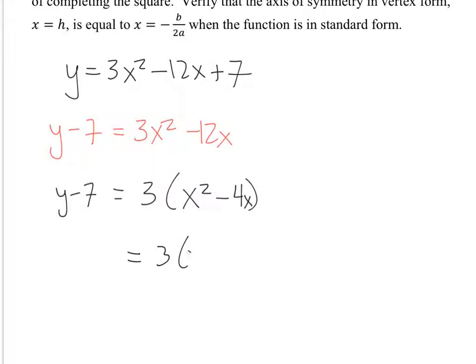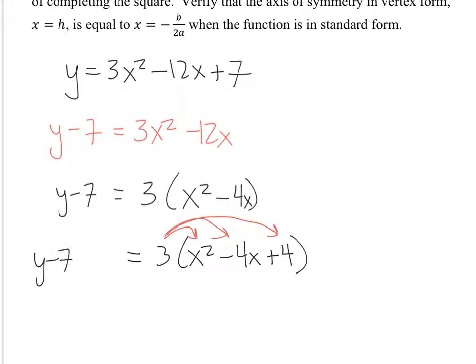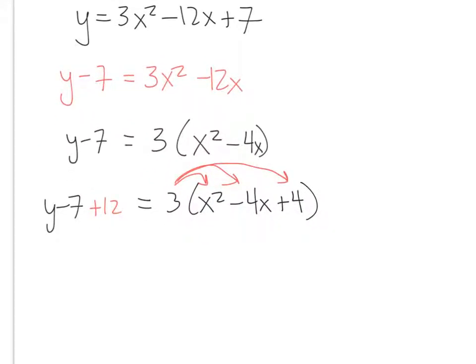When I halve it and square it and add it, I'm getting back to 4. But what am I really adding to the right-hand side of the equation? Am I actually adding 4? No — because of the 3 under the distributive property, by putting a 4 inside the parentheses I'm technically adding 3 times 4, which is 12, to the right-hand side. So on the left-hand side I've got y minus 7 plus 12. And on the right-hand side we can write this as x minus 2, quantity squared.